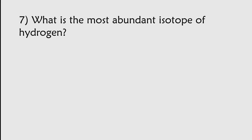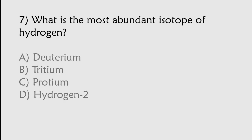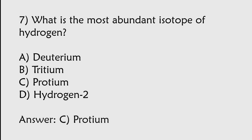What is the most abundant isotope of hydrogen? Deuterium, Tritium, Frutium, Hydrogen-2. The correct answer is option C. Frutium is the most abundant isotope of hydrogen.